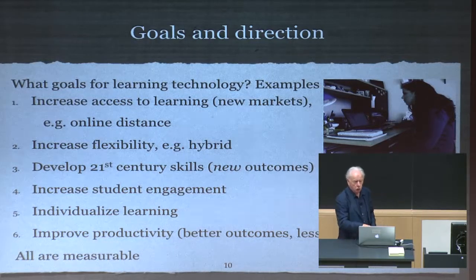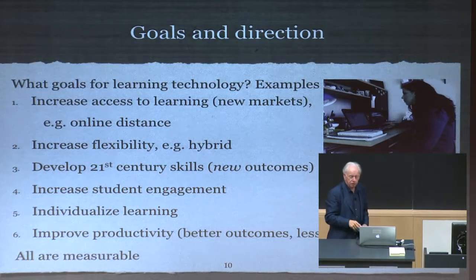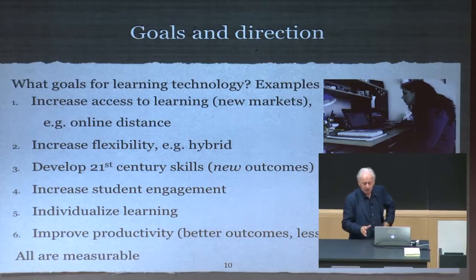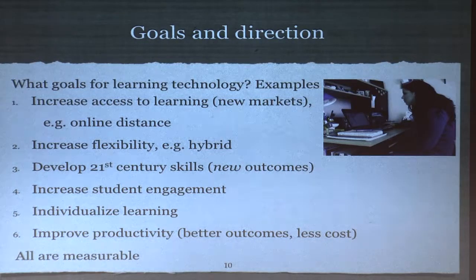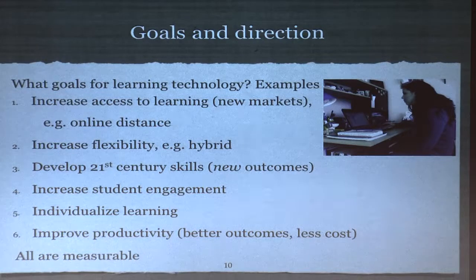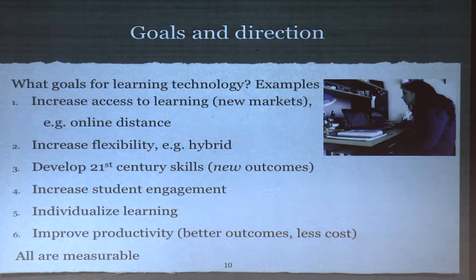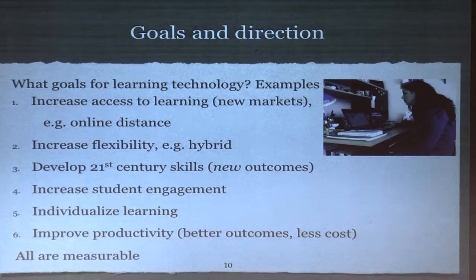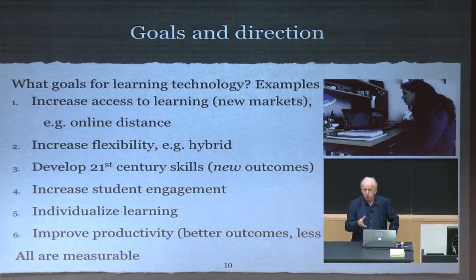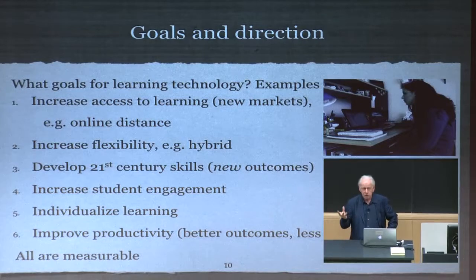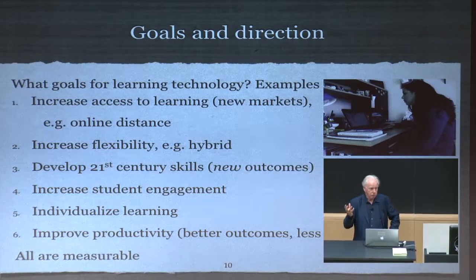The interesting thing about these goals is they're all fairly easily measurable, except perhaps the new outcomes one, though even that should be fairly measurable. You can measure whether you're increasing access. You can measure whether you've increased flexibility. You can measure all these things — but we don't do that. And if you're going to be a leader and want to improve the organization, you've got to have some ways of measuring whether you're successful or not.